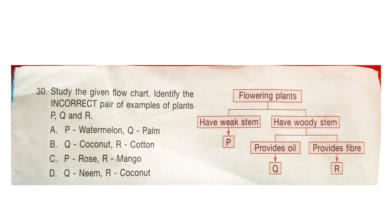Question 30: Study the given flowchart. Identify the incorrect pair of examples of plants P, Q, R. The correct answer is option C. P is Rose — P does not have a weak stem, it has a woody stem. And R is given as Mango, which does not give fiber. So this is the incorrect pair.